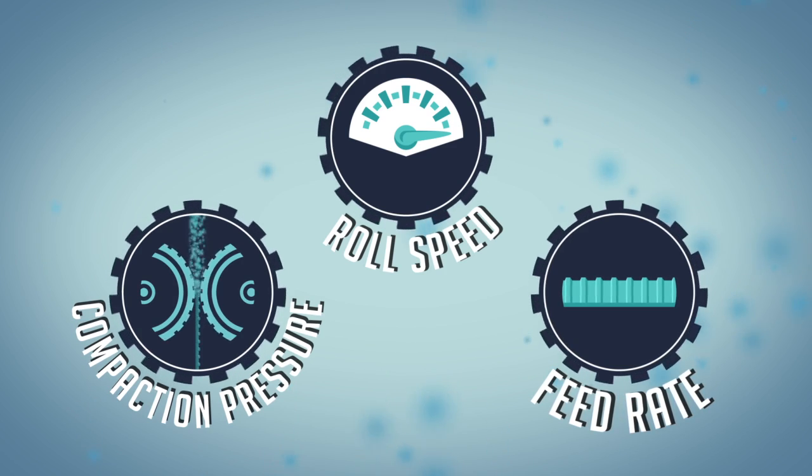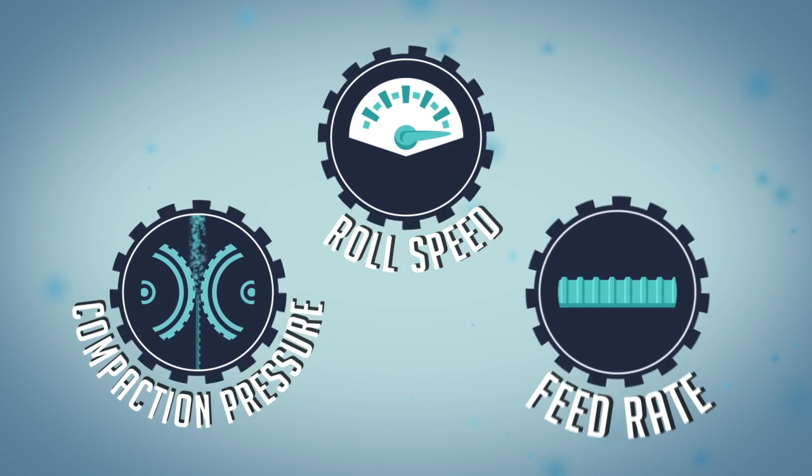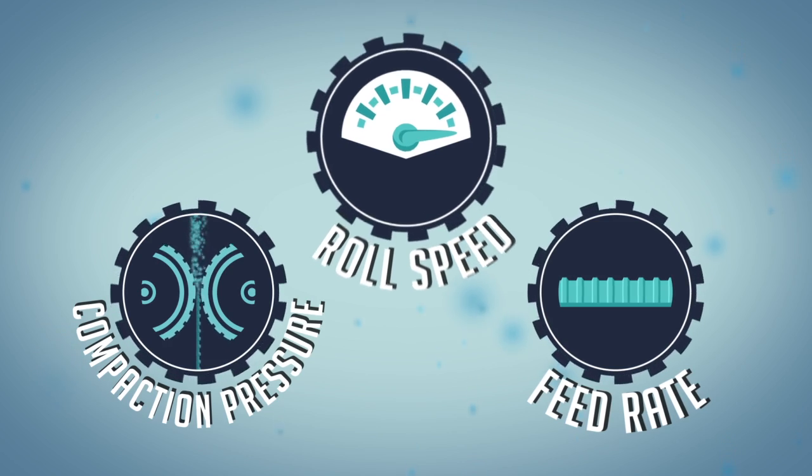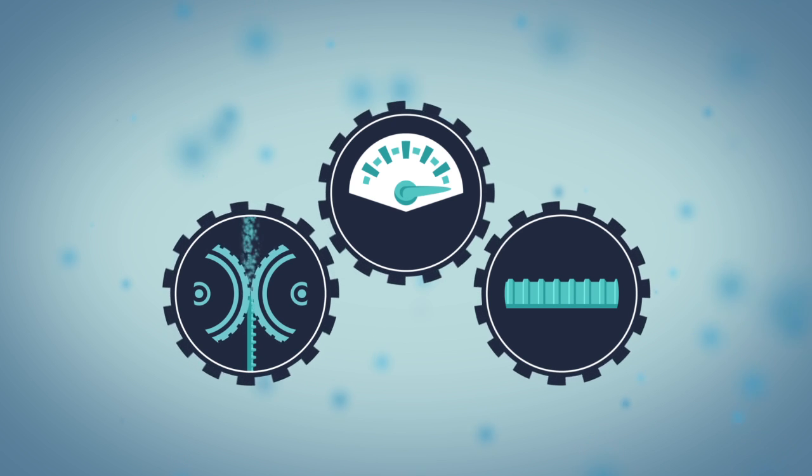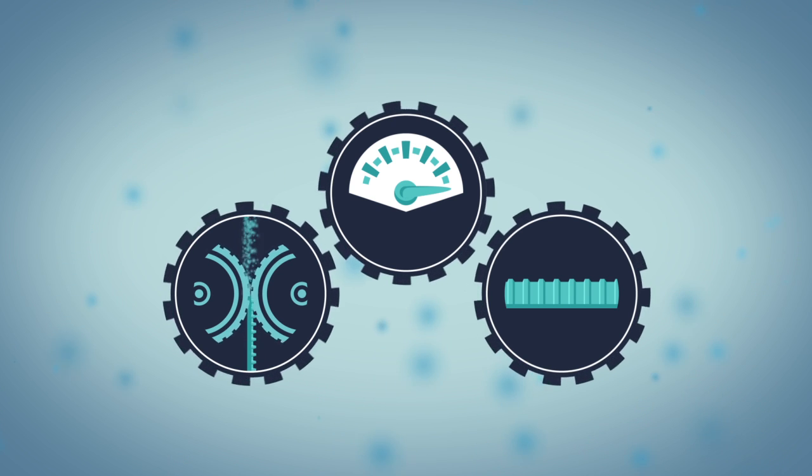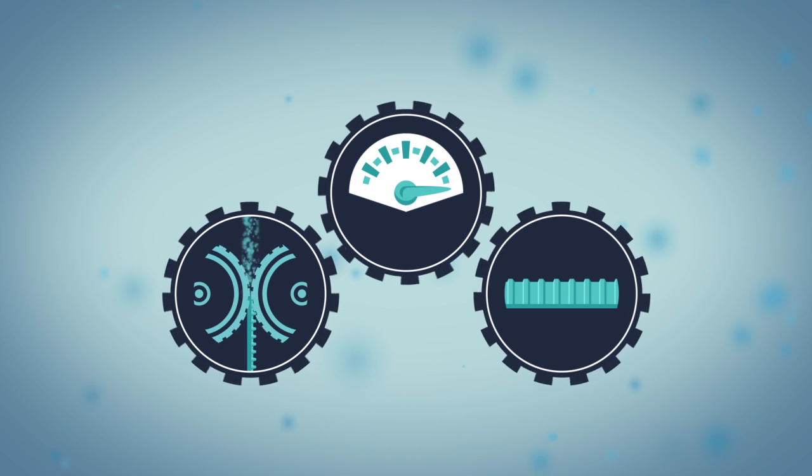Each of these three parameters—feed rate, compaction pressure, and roll speed—need to be optimized together to achieve an efficient process that will produce quality ribbons which can be post-processed downstream.